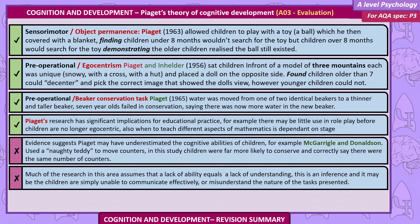Evidence suggests Piaget might have underestimated the cognitive abilities of children. For example, McGarrigal and Donaldson used a naughty teddy to move counters, and in this study children were far more likely to conserve and correctly say they were the same number of counters. Much of the research in this area assumes that a lack of ability equals a lack of understanding. This is an inference, and it might be that children are simply unable to communicate effectively or misunderstand the nature of the task presented.